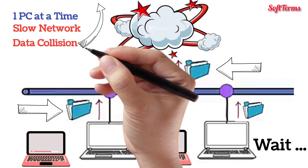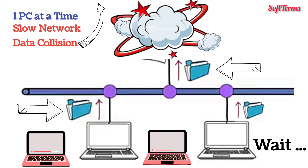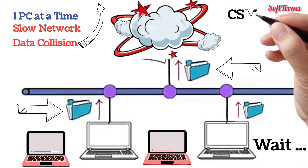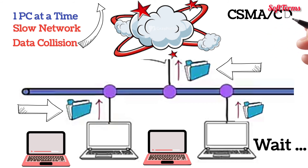It is one of the reasons why bus topology is rarely used in modern computer networks. Collisions can be avoided by using an access control protocol — for example, Carrier Sense Multiple Access with Collision Detection (CSMA/CD). An example of bus topology is Ethernet LAN.